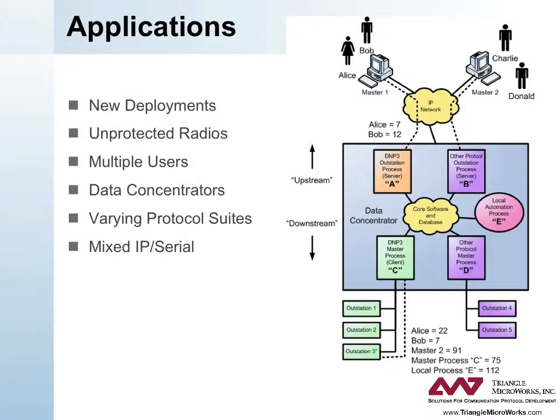DNP3 Secure Authentication is suited for the following types of applications. New deployments: because this is an addition to the DNP3 protocol itself, it will require new software or firmware at both ends of the connection. Therefore, it may be most convenient to deploy DNP3 Secure Authentication in new networks and investigate other solutions for legacy systems. Unprotected radios: radio systems with serial link inputs that are not authenticated or encrypted represent one of the most vulnerable types of DNP3 deployments. Deploying DNP3 Secure Authentication permits these networks to be secured without hardware changes.